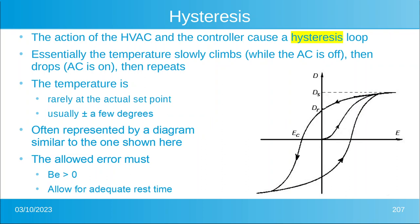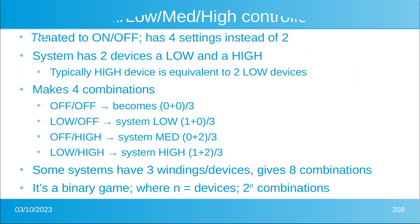The action of the HVAC and the controller cause a hysteresis loop, normally diagrammed as you see on screen. The temperature slowly climbs while the AC is off, then drops while the AC is on, and the cycle repeats. This means the temperature is rarely at the actual set point — it's usually plus or minus a few degrees. The allowed error must be greater than zero because you need adequate rest time for your machine.